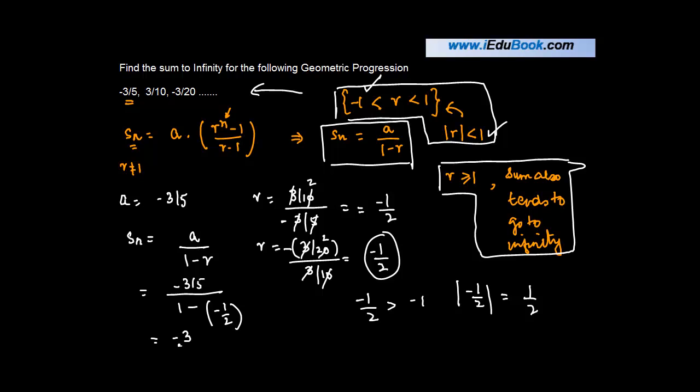So minus 3 upon 5. If we solve the denominator, what do we get? We get 1 plus 1 by 2, which is 3 by 2. 2 into 2 upon 3. 3 knocks off 3. So you get minus 2 upon 5. So the sum of infinite term of this given GP is going to be equal to minus 2 upon 5.